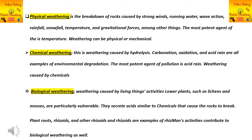To summarize, the three types of weathering are: physical weathering, caused by physical factors like winds, running water, wave action, rainfall, and snowfall; chemical weathering, involving acid rain, carbonation, and oxidation; and biological weathering, caused by living things like lower plants, lichens, and mosses.